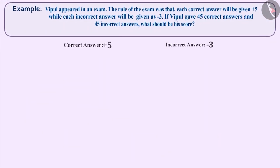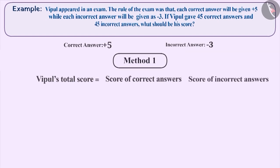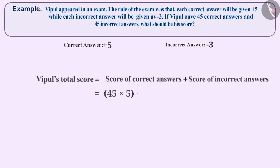We can find the solution by two methods. The first way is to find out the score for correct answers and similarly the score for incorrect answers, then add both results. So Vipul's total score is equal to 45 multiplied by 5, plus 45 multiplied by minus 3, which equals 225 plus minus 135, which equals 90.